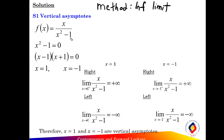First, let the denominator of the rational function equal to 0 and factorize: x squared minus 1 equals x minus 1 times x plus 1 equals 0. Find the value of x: x equals plus or minus 1. Then use the infinite limit to find the infinite limit of the rational function.